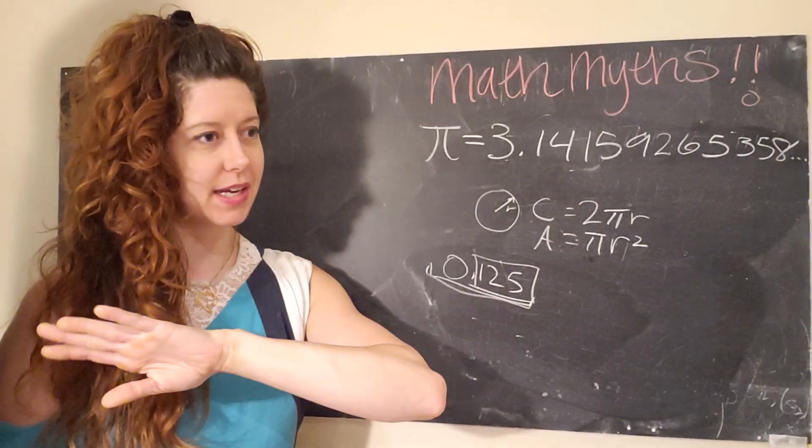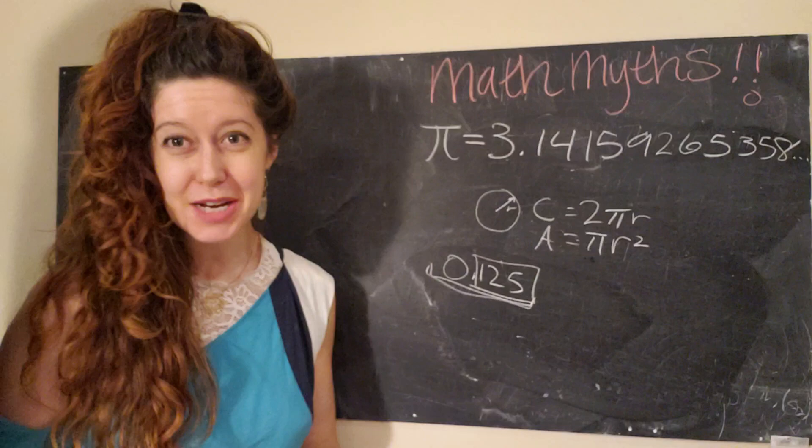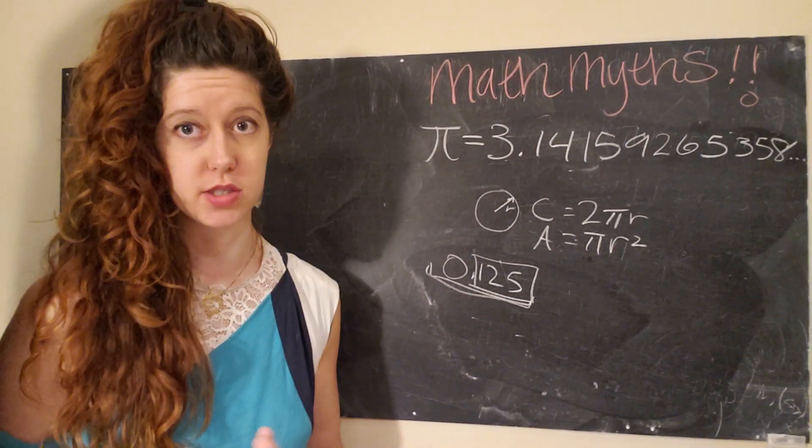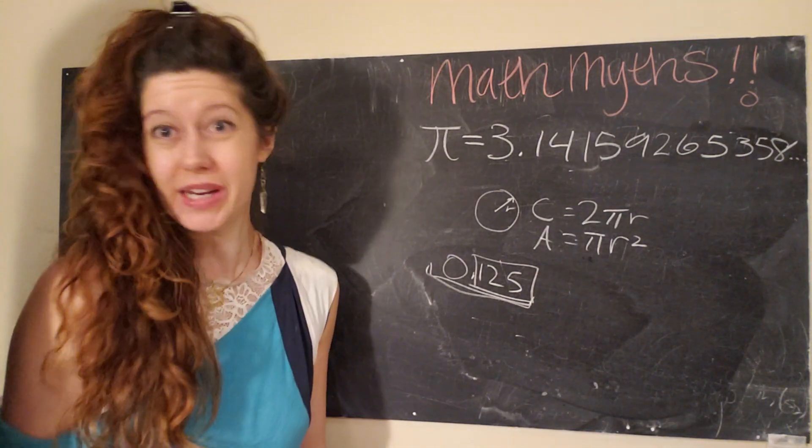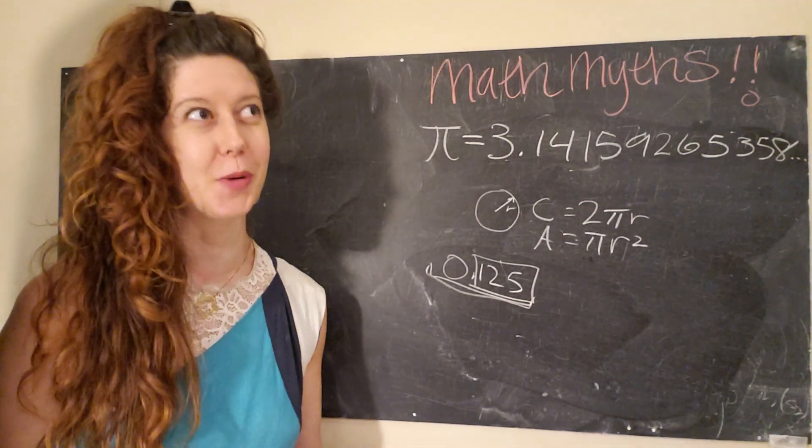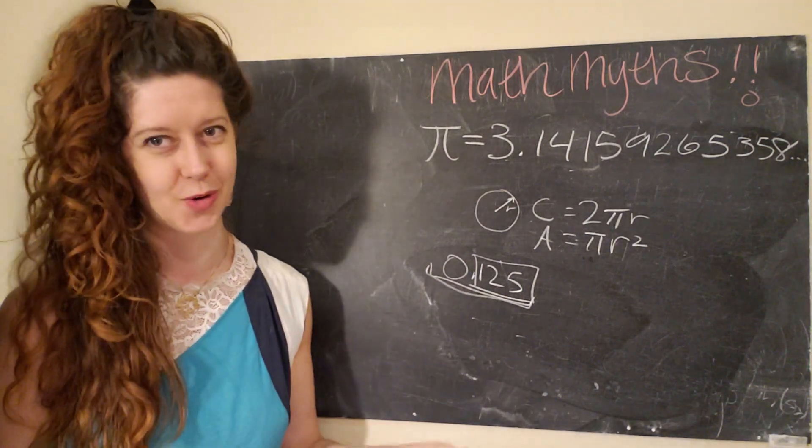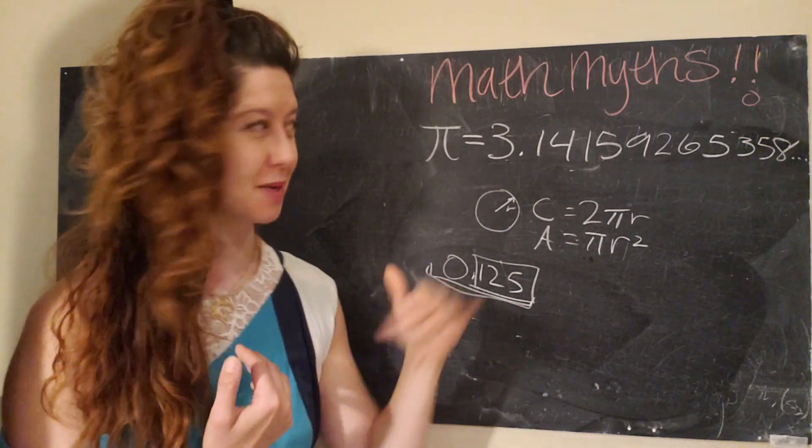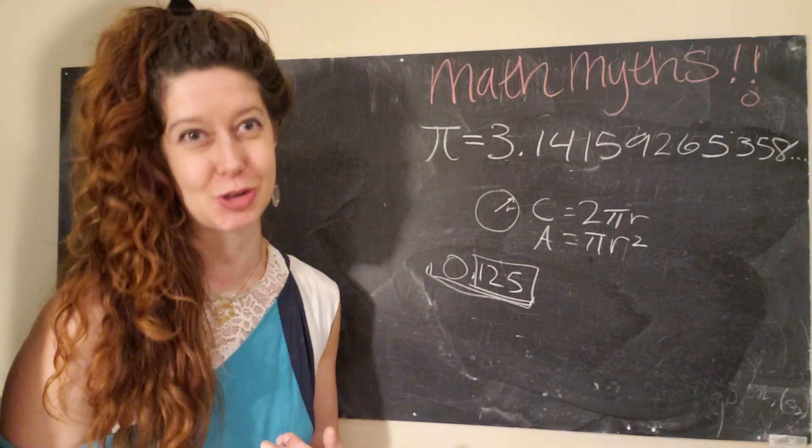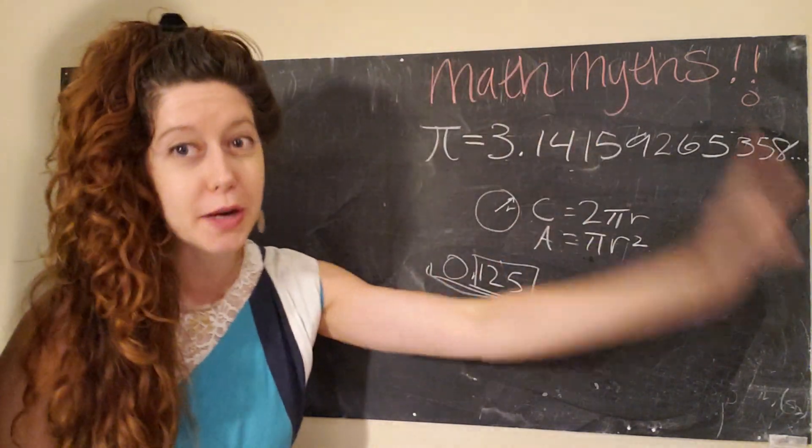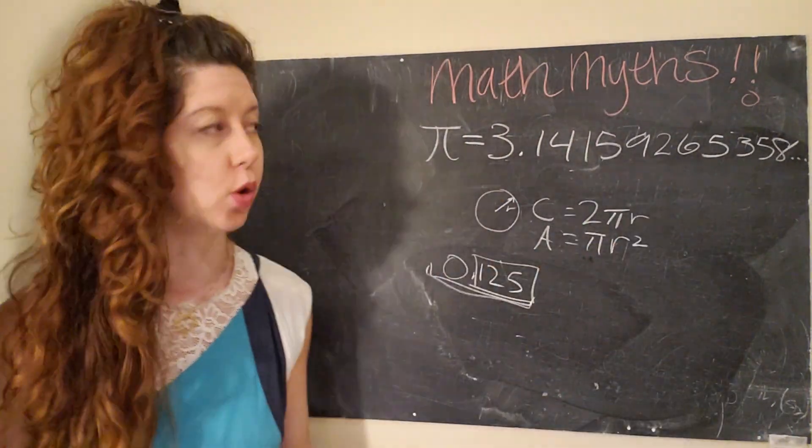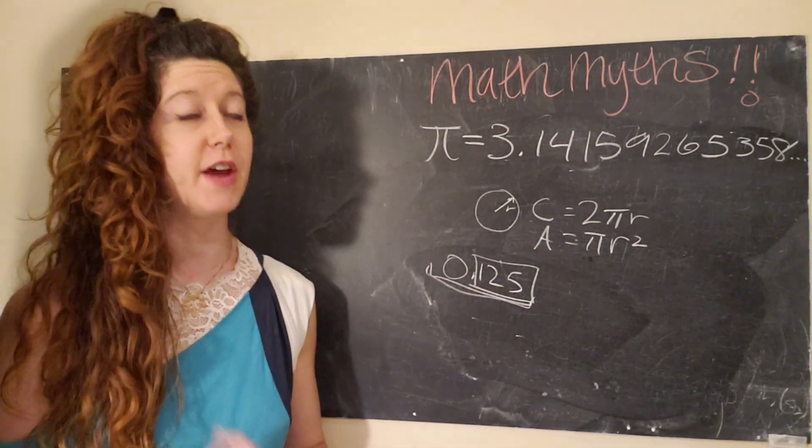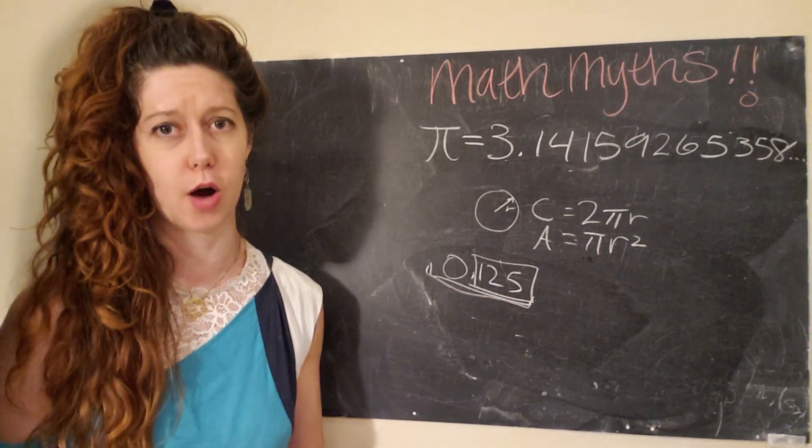And so that actually is the answer to the second part of the myth, which is, does pi contain all possible combinations of strings? Well, to be honest, we can't possibly know, because we literally don't have enough time to sit down and write out the infinite digits of pi. We are finite beings. Pi is not a finite number. So at a certain point, something has to give. Even if you had generations on generations of people, you still are never going to reach the end. And so you still can never know for sure if pi contains all possible combinations of strings.